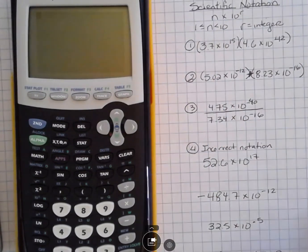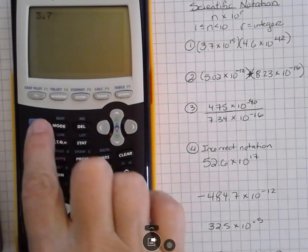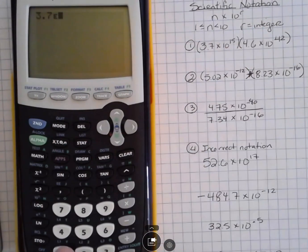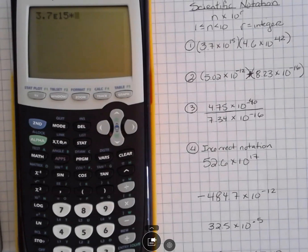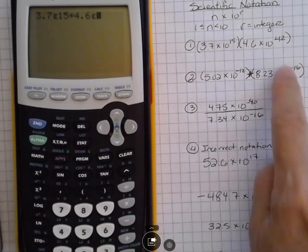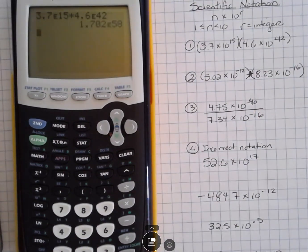So I'm going to do this first one, 3.7, and I'm going to do second function EE, and then 15, because that's the power. And then times, and I could use parentheses instead, but I can just use times here. That would work fine. 4.6, second function EE, and then 42, and then just hit enter.